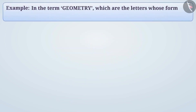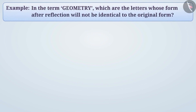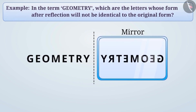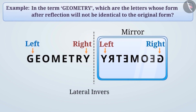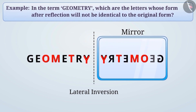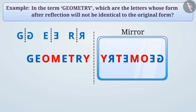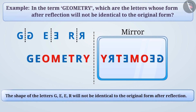Example 2: In the word 'geometry', can you tell which are the letters whose reflection will not be identical to the original form? Imagine we place the word 'geometry' in front of a mirror. The right part appears to the left and the left part appears to the right — this is what we call lateral inversion. Even after reflection, there is no change in the form of the English letters O, M, T, Y — their shape remains identical to the original form even after reflection. But if we talk about the English letters G, E, R, etc., their right part appears to be left in the reflection and their left part appears to be right in the reflection. Therefore, the shape of the letters G, E, R will not remain identical to the original form after reflection.